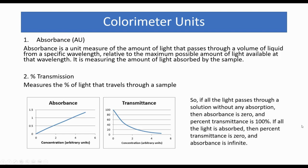If all the light passes through a solution without any absorption, then absorbance is zero and percentage transmittance is 100 percent. If all the light is absorbed, then percent transmittance is zero and absorbance is infinite.